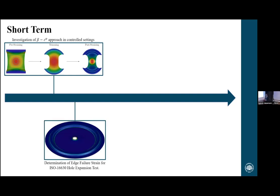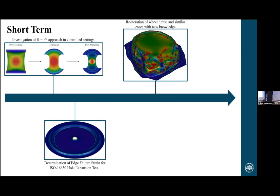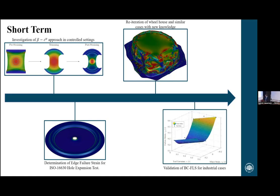Next is to determine the failure strain for the hole expansion test to see if we can actually prove the hypothesis posted at the beginning. We also need to do a reiteration of the wheelhouse study with knowledge obtained from controlled settings, to see what can be applied for accurate results. Finally, for the bending corrected forming limit surface, I need to do validation for more industrial cases — the current validation was in a nice experimental setting, so let's see what happens with actual components running in production.